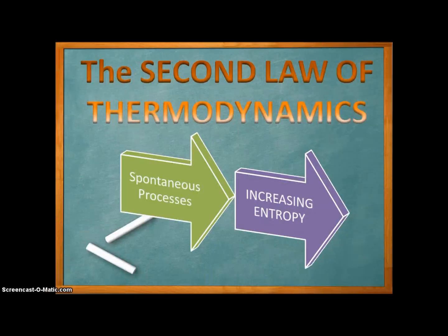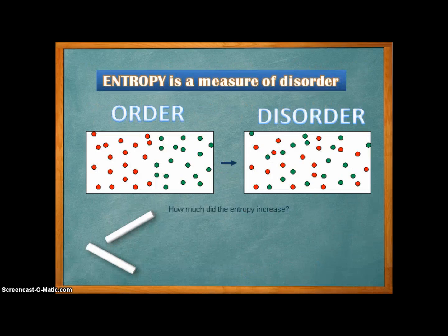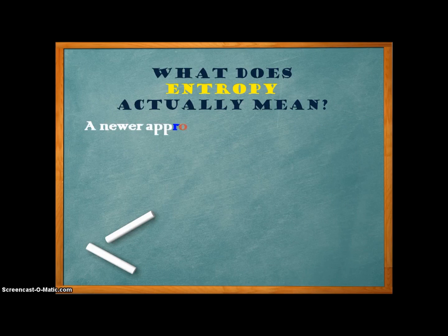In the second law of thermodynamics, we always relate that spontaneous processes happen in a direction of increasing entropy. Entropy, which is usually defined as a measure of disorder, is ambiguous. Thus, a newer approach sets out a variant approach to entropy.